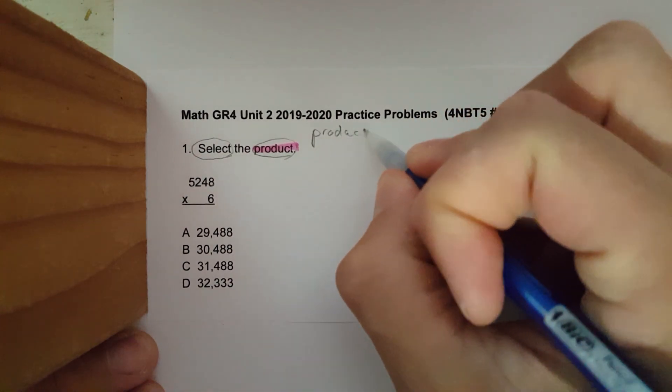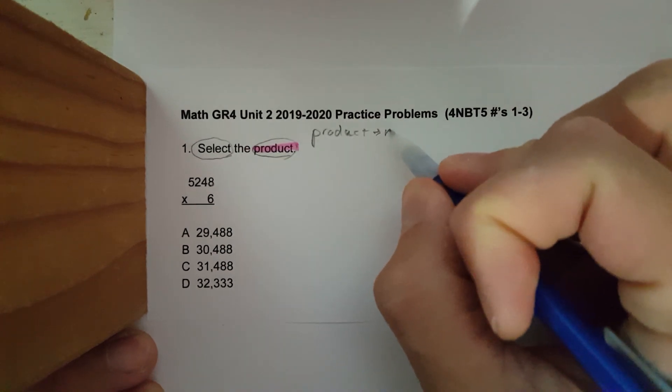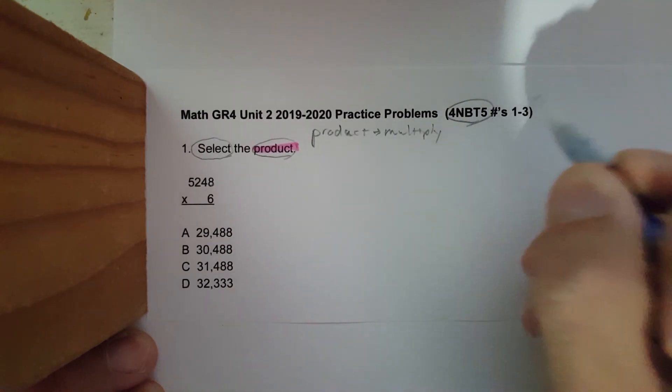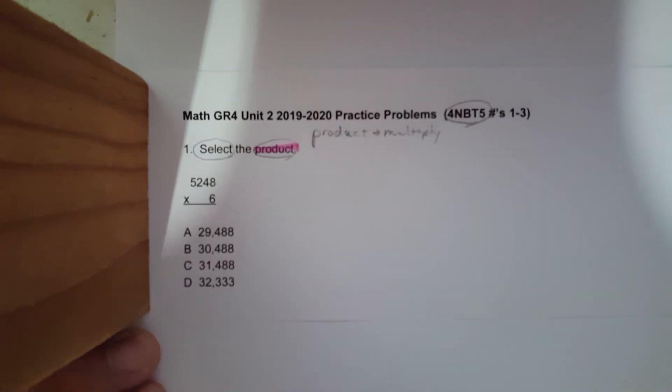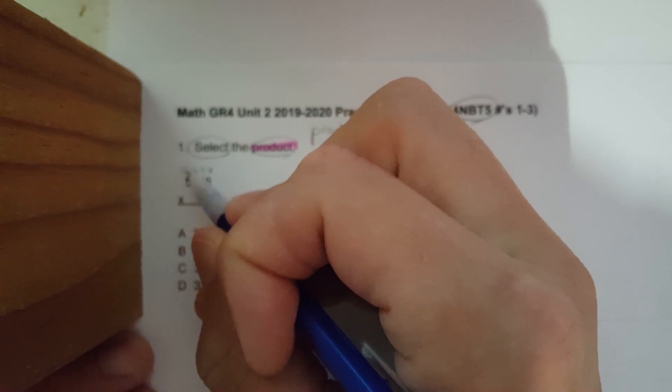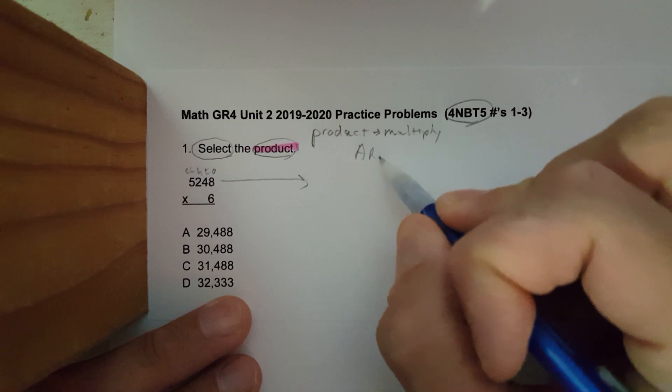We write it. We have the word product. Product also means to multiply. Again, it's this standard. Now let's separate it by place value: ones, tens, hundreds, thousands, and to do area model.